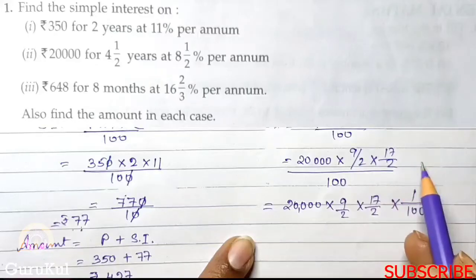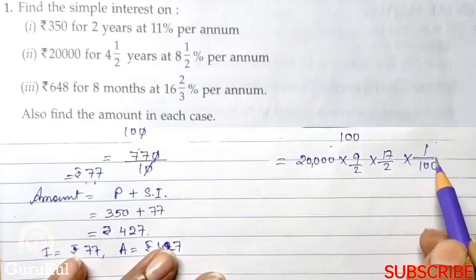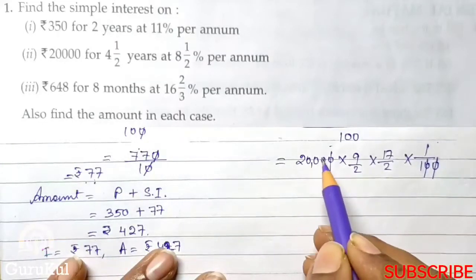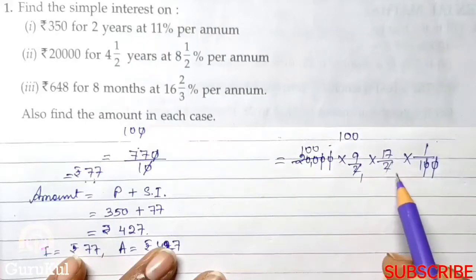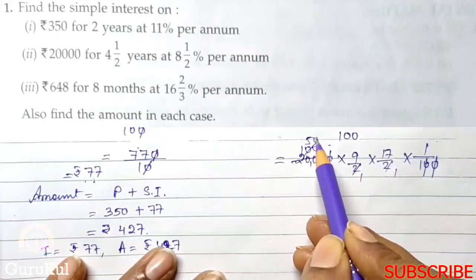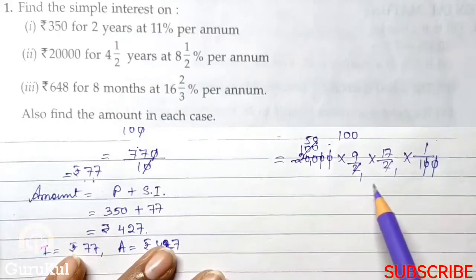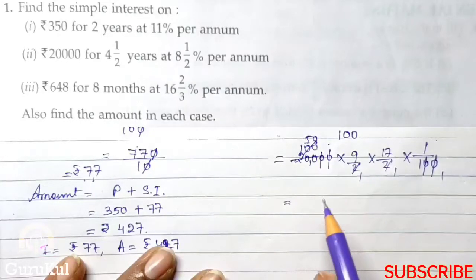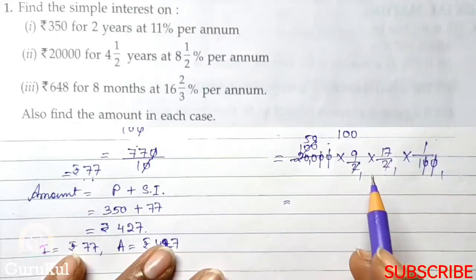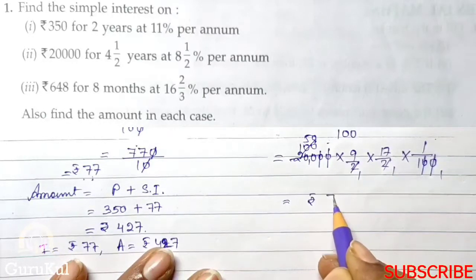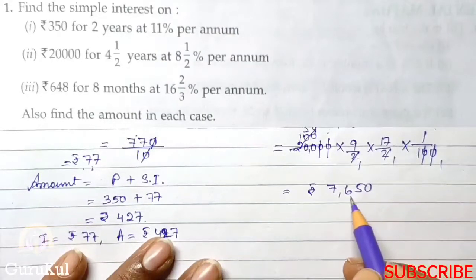The denominator becomes reciprocal, into 1 by 100. So 0, 0, 0, 0 got cancelled, 2 1s are 200, 2 1s are 50, so 50, 9 and 17, below everything is 1. So when we multiply 50 into 9 into 17, we will get the answer 7650. So this is our interest.